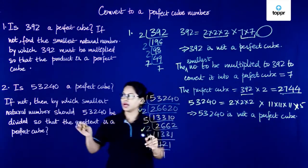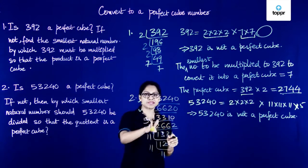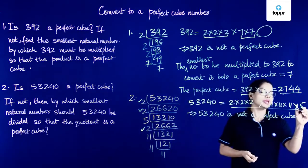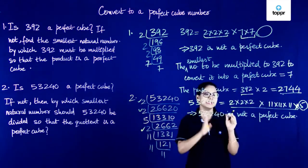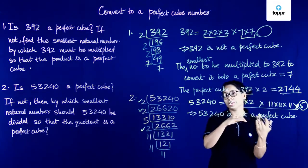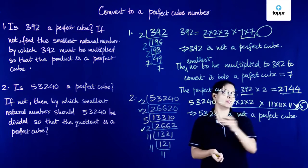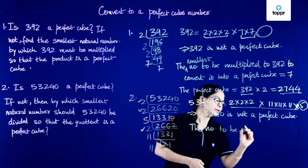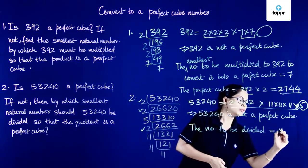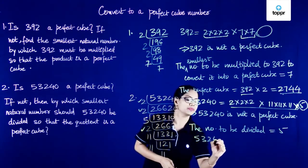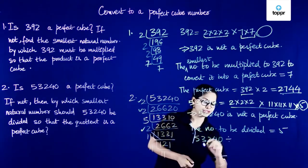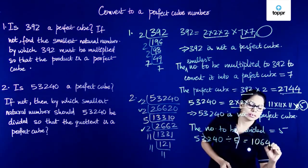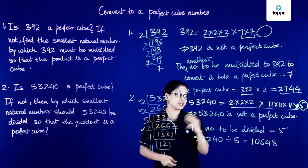The next part of the question asks us to find the smallest number by which this given number must be divided so that the quotient becomes a perfect cube. Looking at the prime factorization, if we remove 5, we are left with only triplets — numbers that when multiplied give a perfect cube. So the number to be divided is 5. Therefore, 53,240 divided by 5 gives us 10,648, which is a perfect cube.